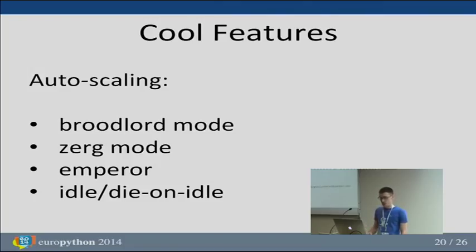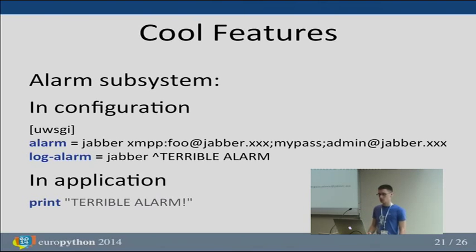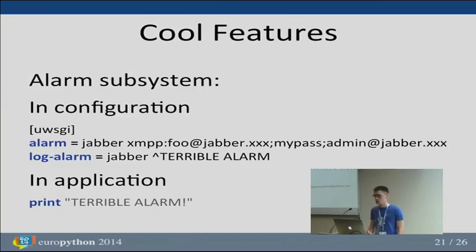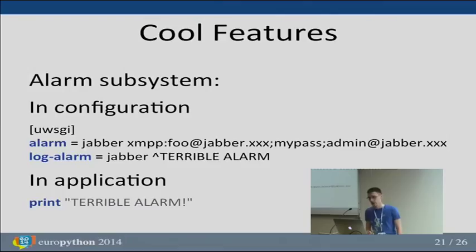As of version 1.3, there is an alarm subsystem that allows developers or sysadmins to be notified of special conditions via various channels. For example, you may want to get a Jabber notification when a certain string appears in log files. There are many options to configure this alarm subsystem.